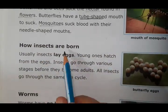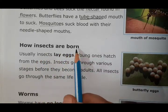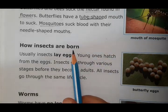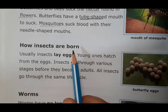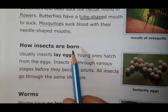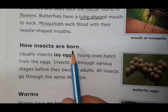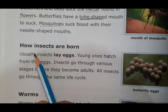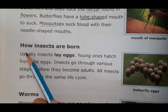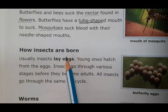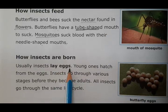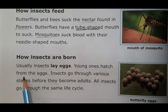Now, how are insects born? Usually insects lay eggs, and young ones hatch from the eggs. Insects go through various stages before they become adults — just like human beings go through different stages: infant, toddler, child, teenager, adult, and old person.